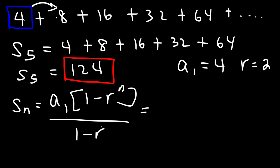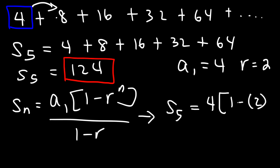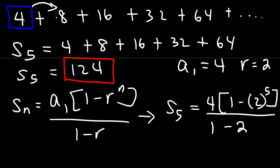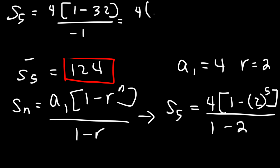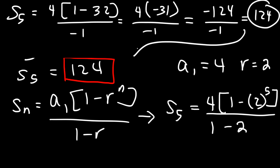So now we can use this formula. Our goal is to calculate the sum of the first five terms, so n is 5. This is going to be a sub 1, which is 4, times 1 minus r. r is 2, raised to the 5th power, divided by 1 minus 2. 2 to the 5th power is 32, and 1 minus 2 is negative 1. So this is 4 times 1 minus 32, which is negative 31, divided by negative 1. 4 times negative 31 is negative 124, and divided by negative 1 gives you positive 124 — the same answer as before.